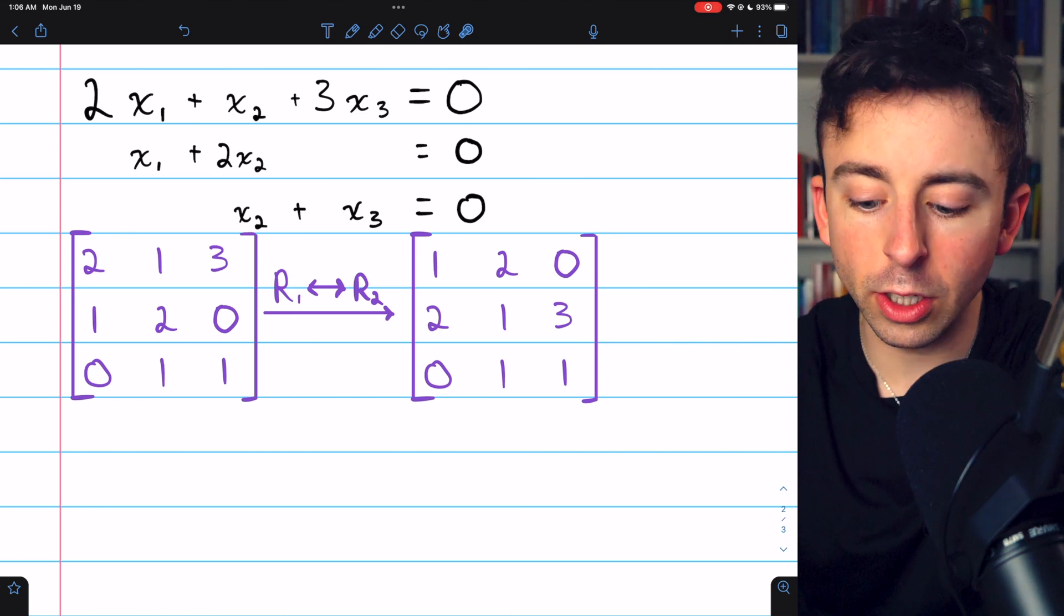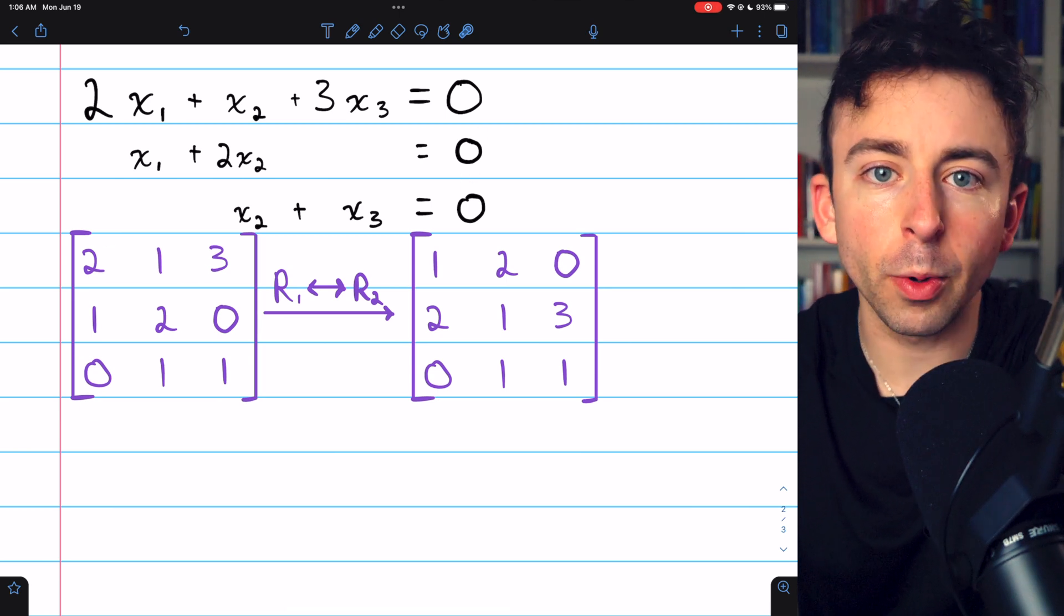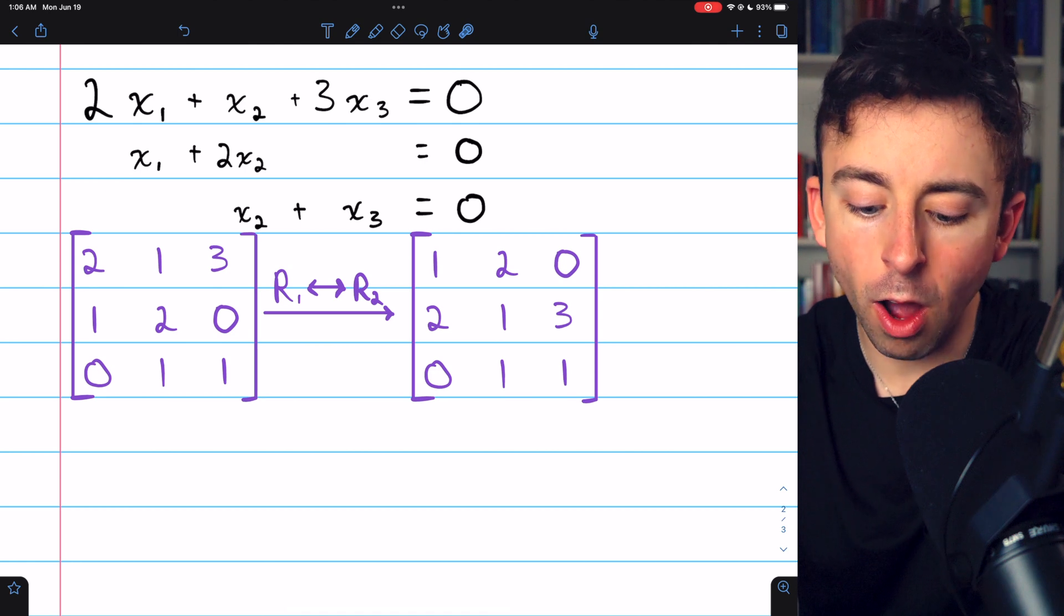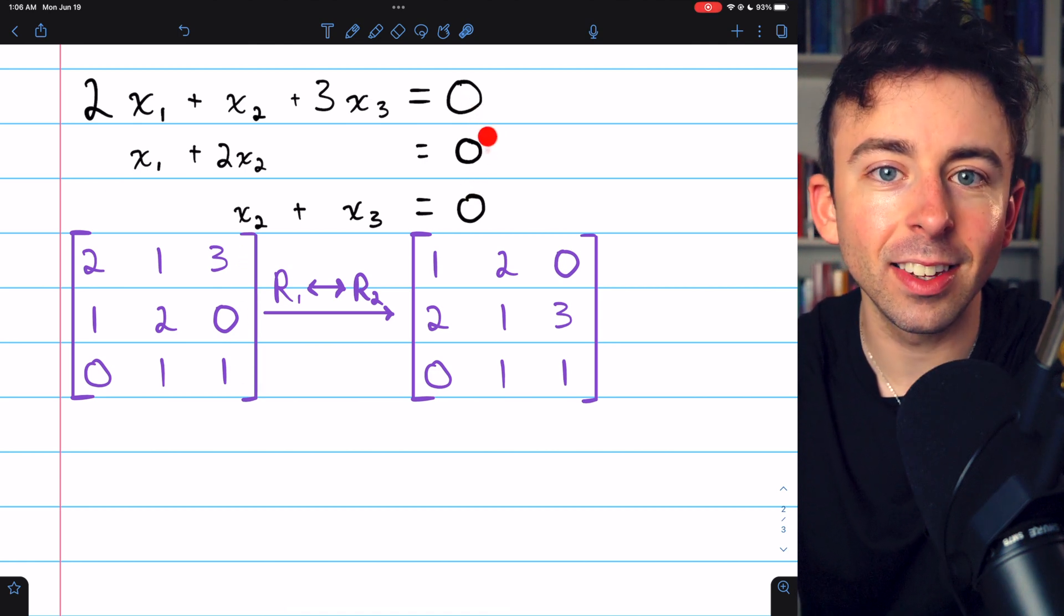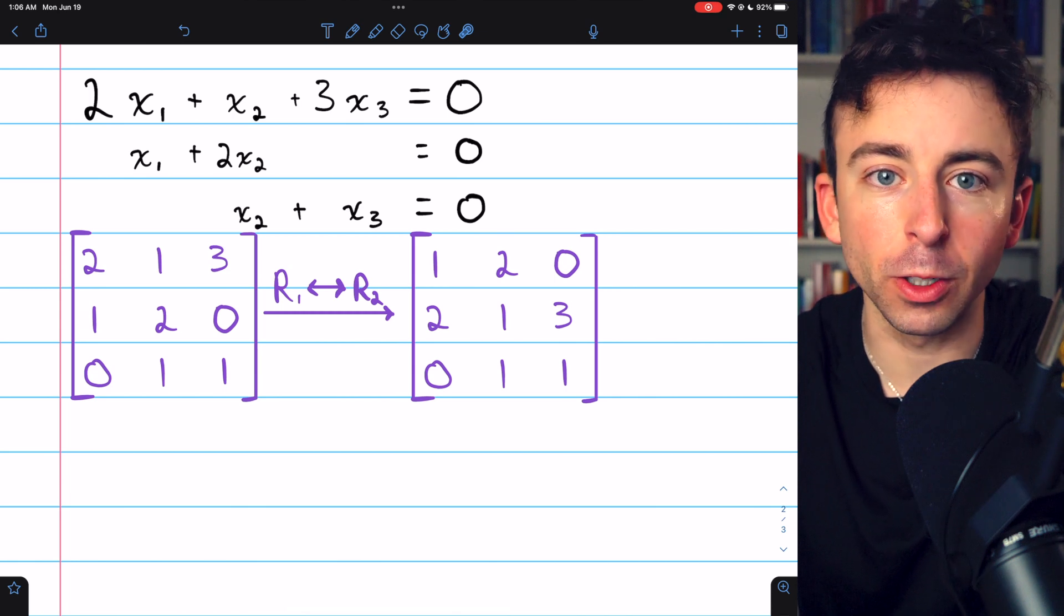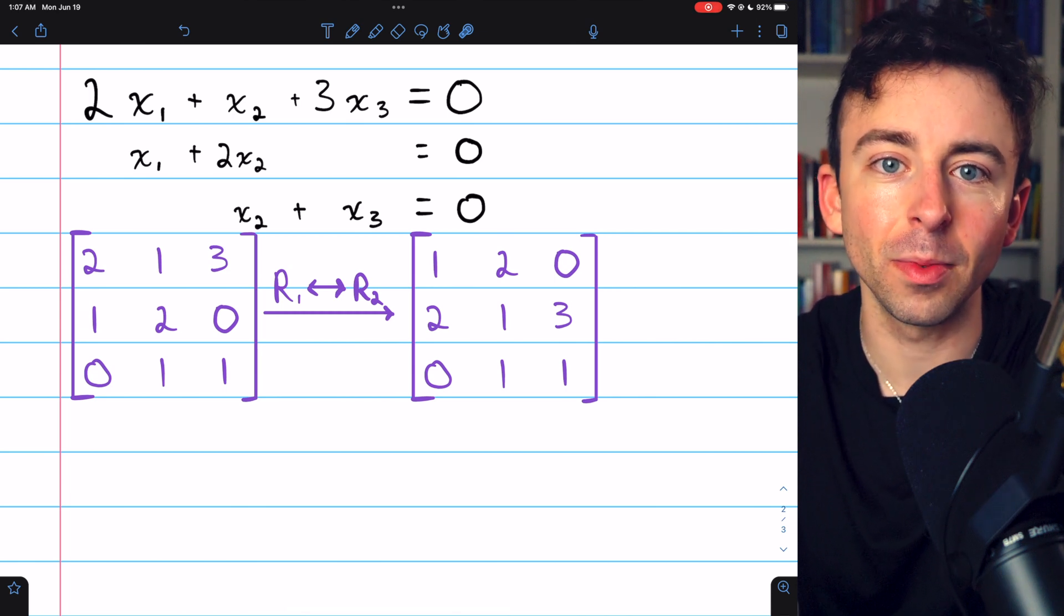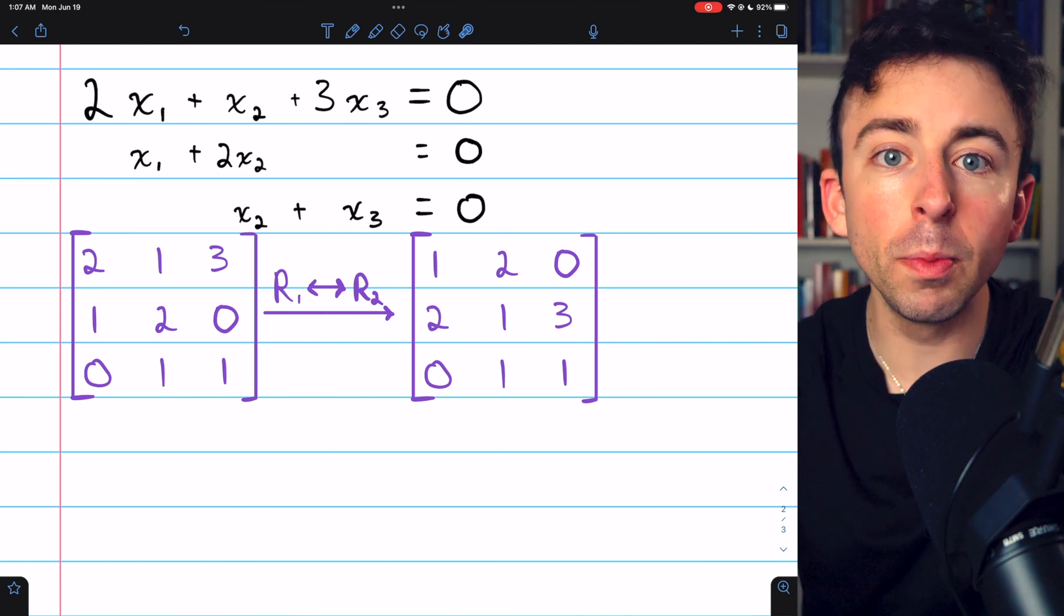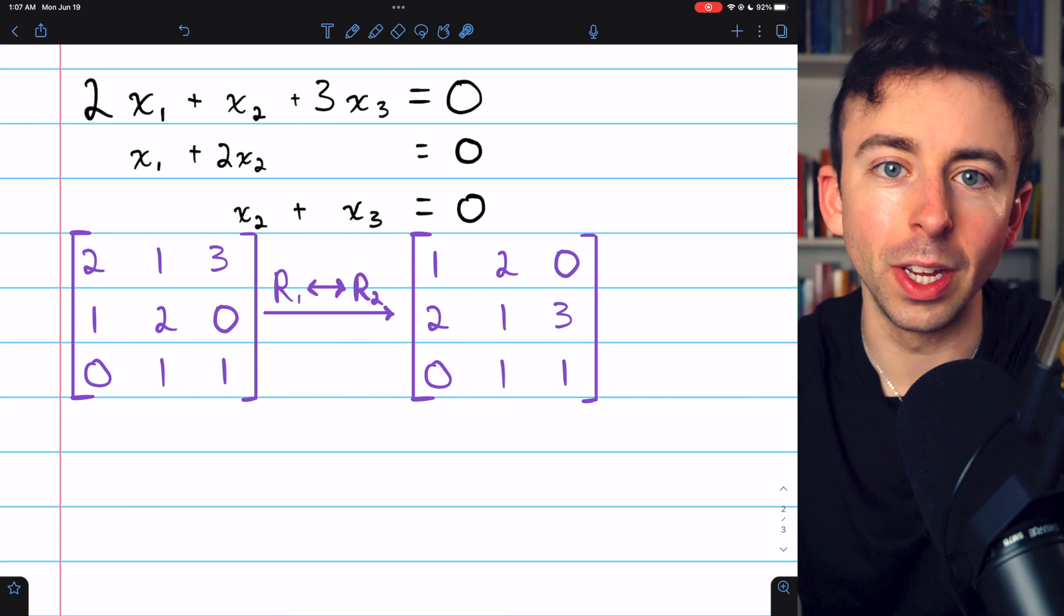This matrix here is the coefficient matrix for the system. Now, I've chosen not to include the constants in the matrix because no matter what operations we perform, the column containing the constants is still going to be all zeros. That's just a characteristic of homogeneous linear systems.